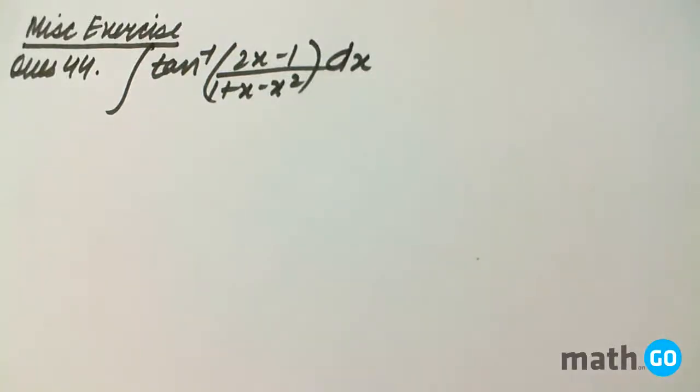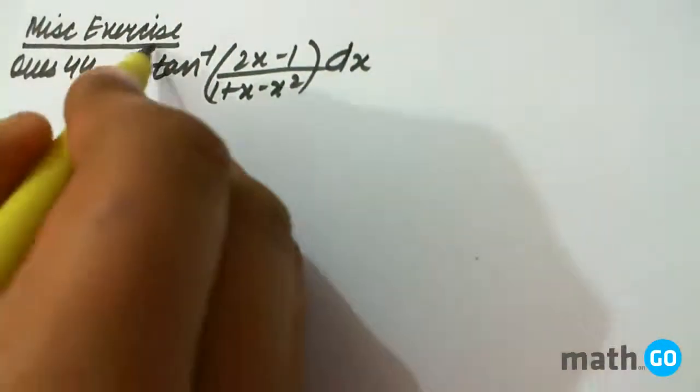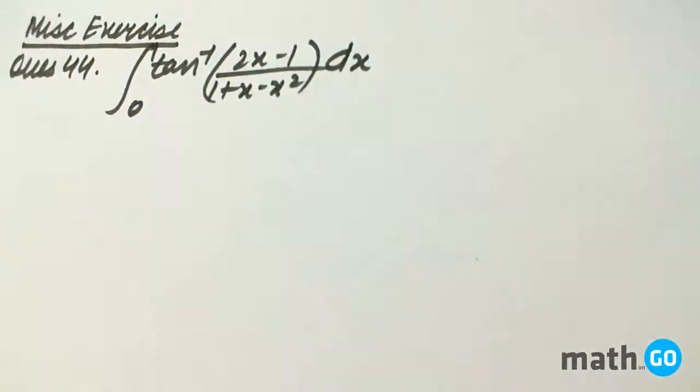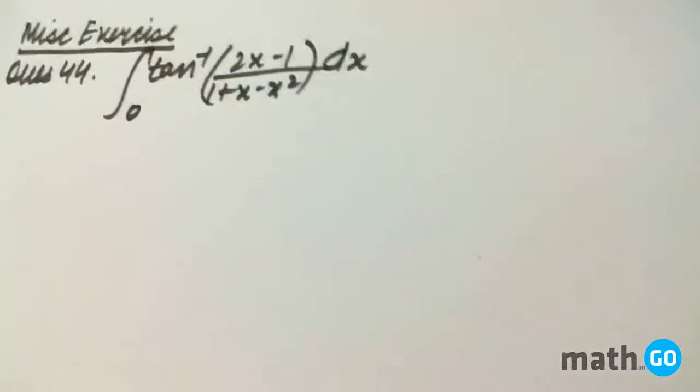Miscellaneous exercise question number 44: tan inverse of (2x-1)/(1+x-x²), and the limits are given to be 0 to 1. A key formula in mind: there is not minus 1 to 1.